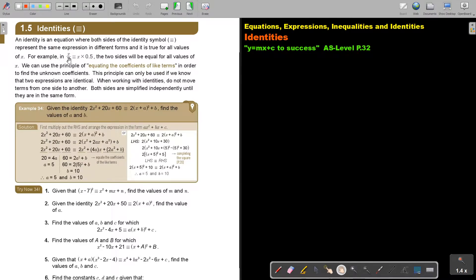For example, if it's like this, the two sides will be equal for all values of X. We can use the principle of equating the coefficients of like terms in order to find the unknown coefficients. This principle can only be used if we know that two expressions are identical.